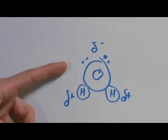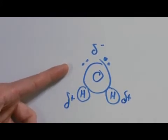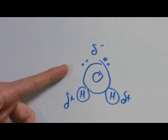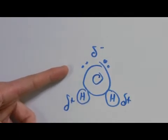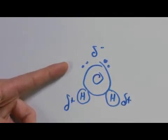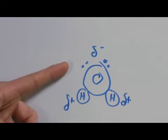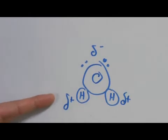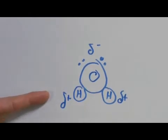So the oxygen tends to hog the electrons a bit more in that bond. And the net result is that the part of the molecule with the oxygen tends to be partially negatively charged and the hydrogen part is partially positively charged because it's given up its electrons.